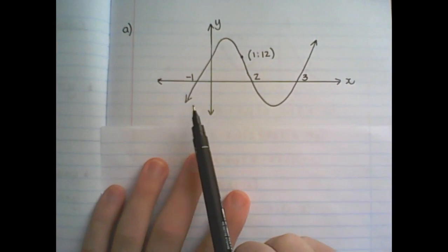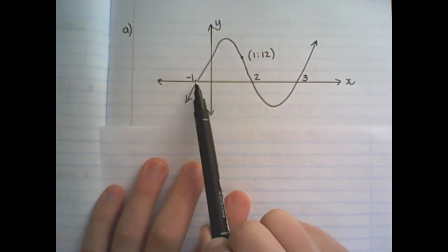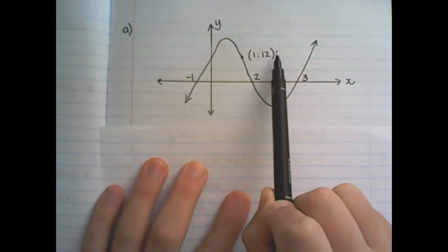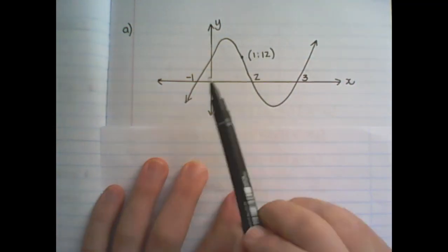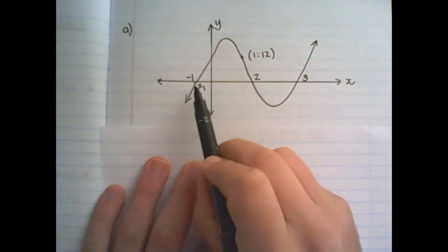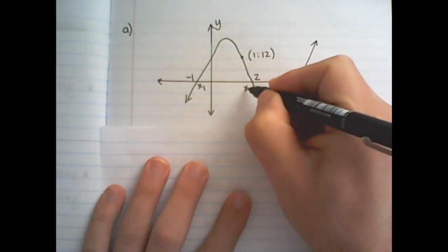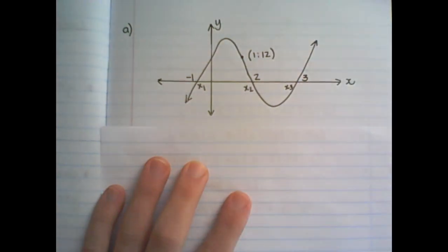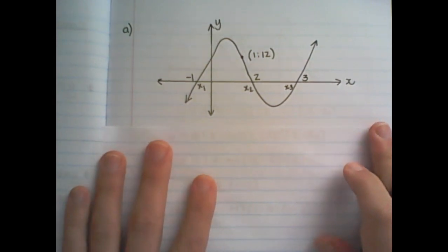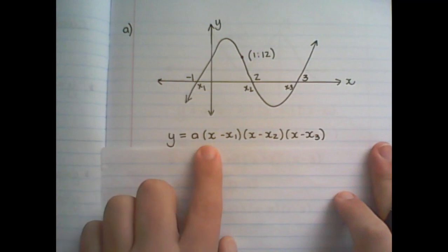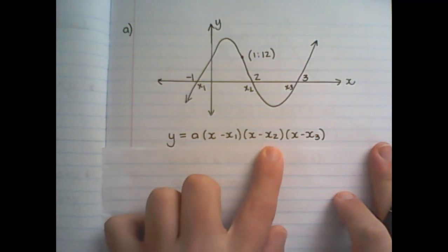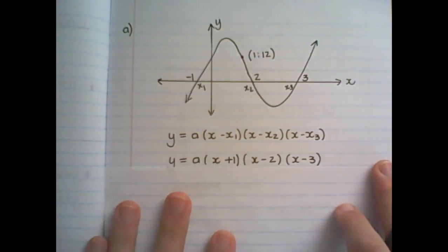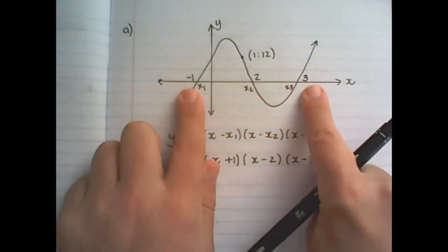Here is our first example. We are given three x-intercepts of negative 1, 2, and 3. We are also given a point on the graph: 1 and 12. Now negative 1 would be x1, 2 would represent x2, and 3 would represent x3. So the equation I can use is y equals a times x minus x1 times x minus x2 times x minus x3, and I substitute the values of negative 1, 2, and 3 into the equation.